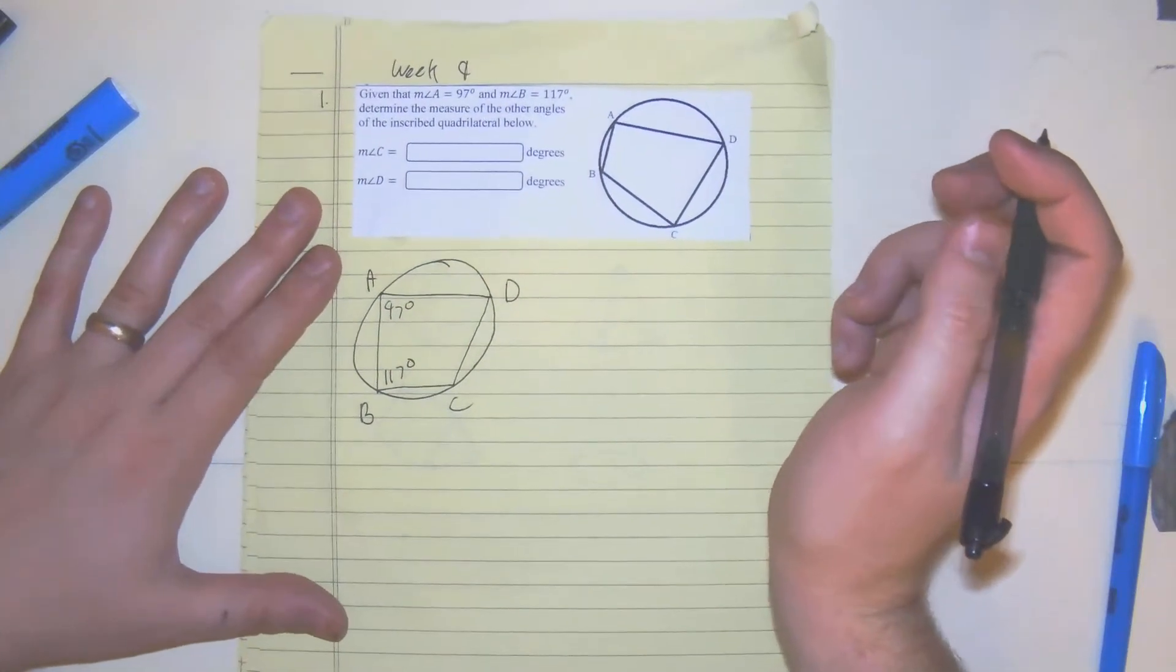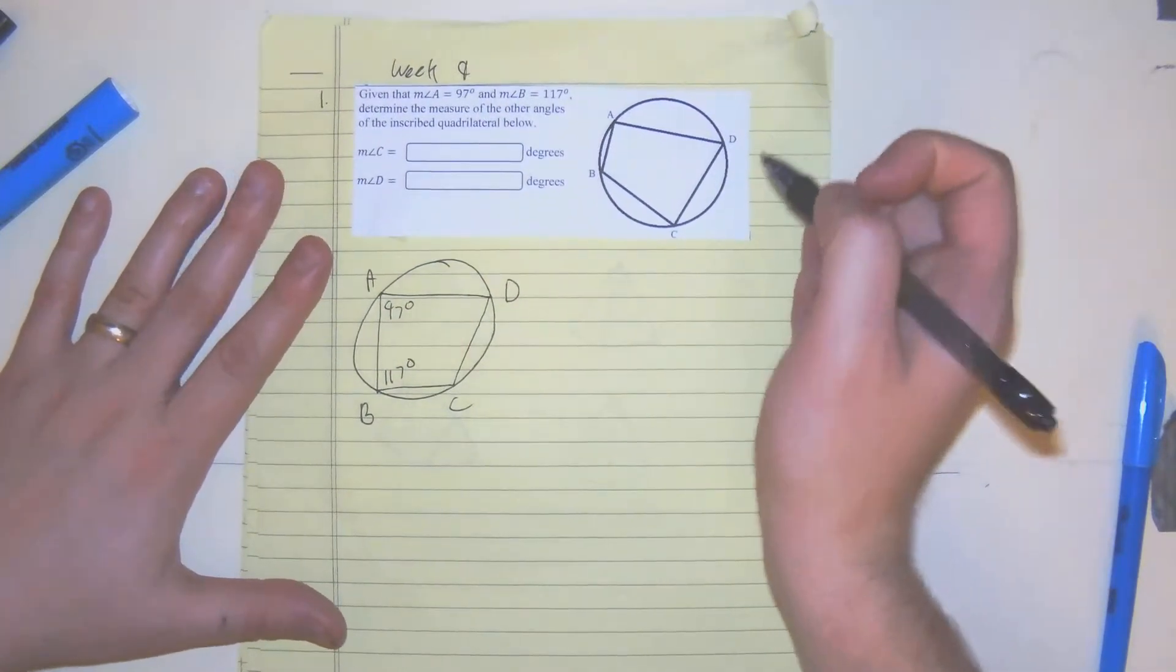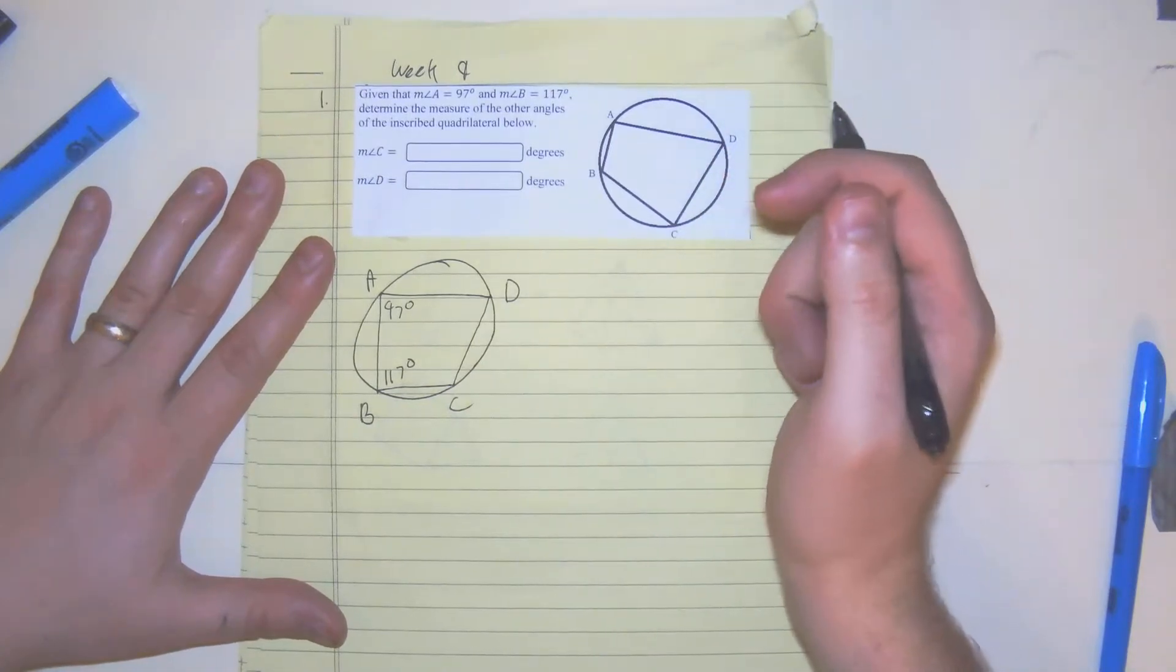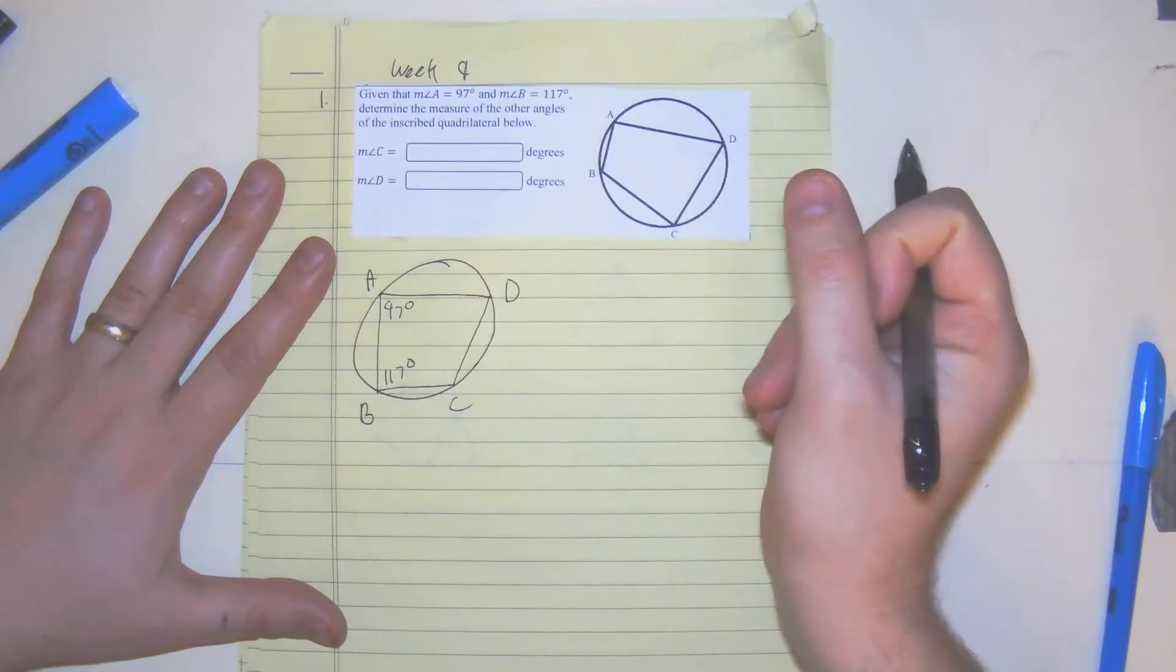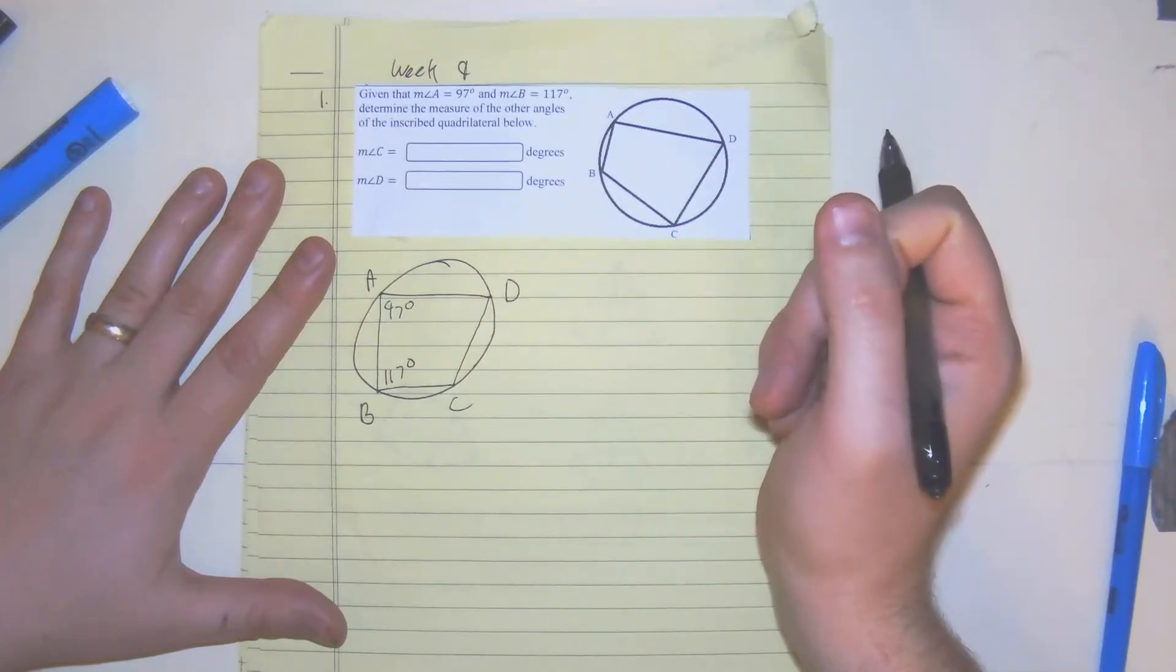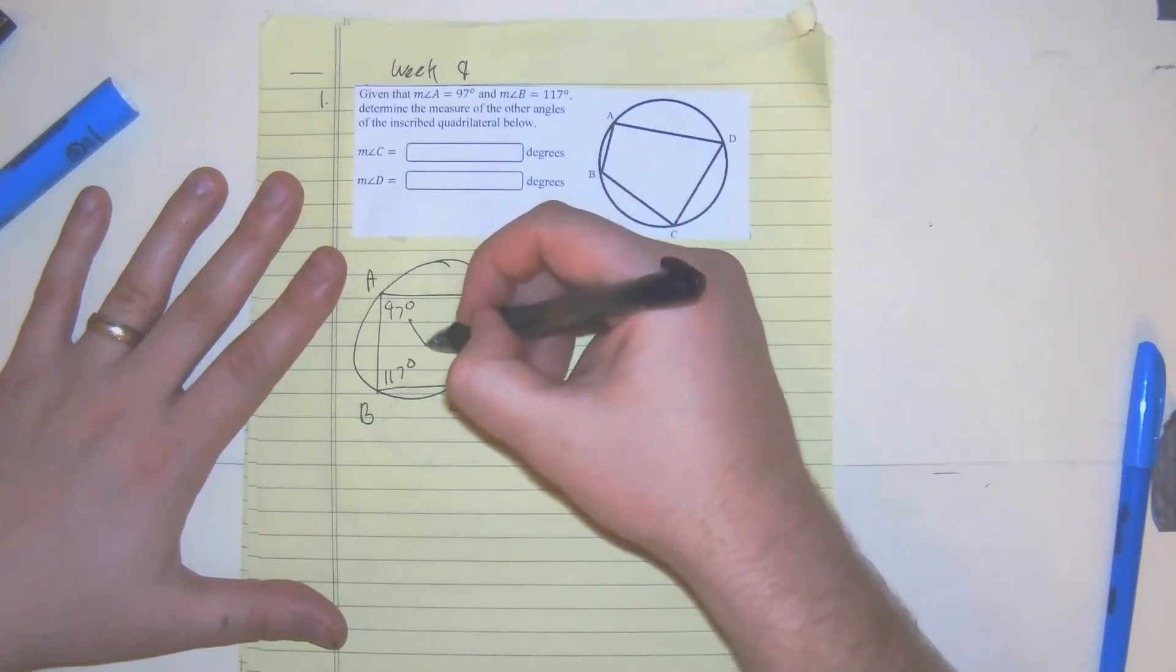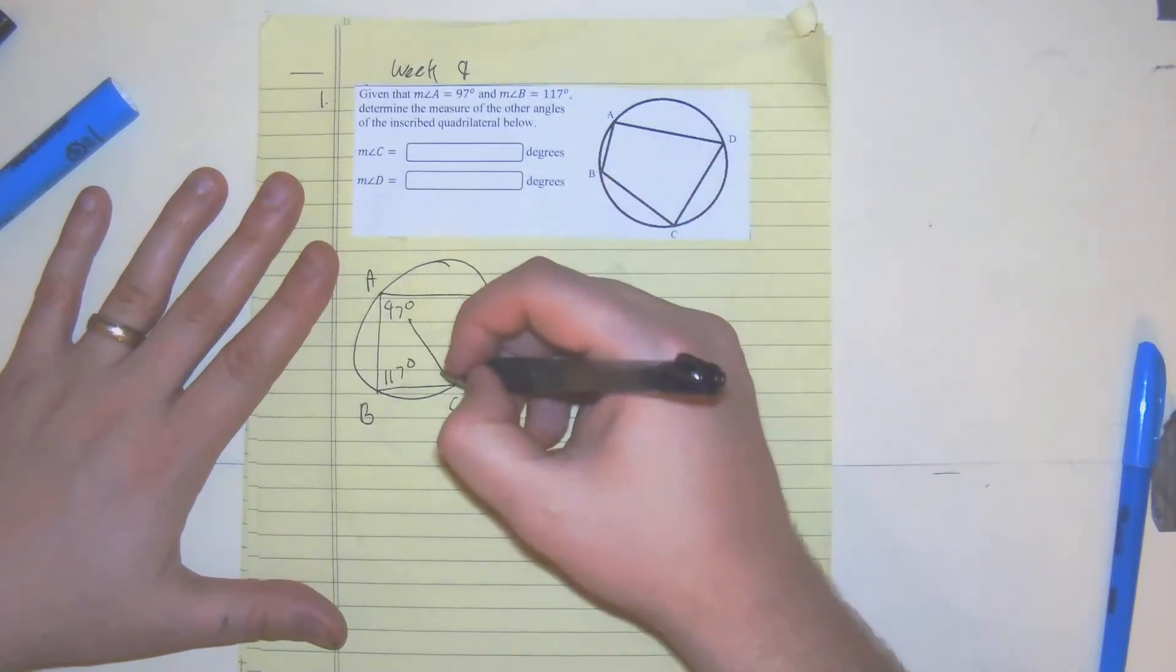So what we know about inscribed quadrilaterals is that their opposite angles are supplementary. So opposite angles - A goes with C.